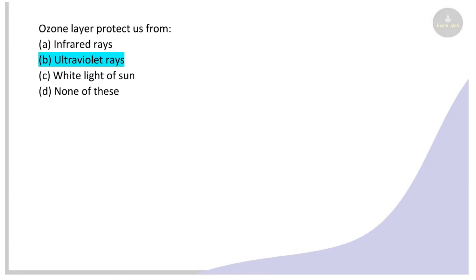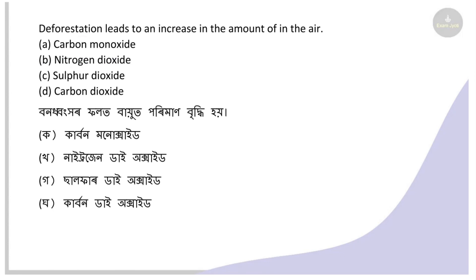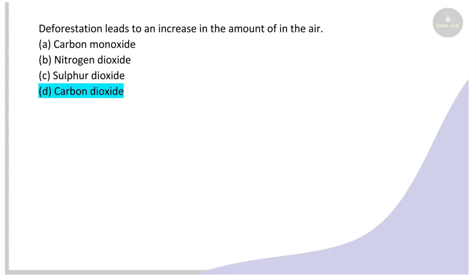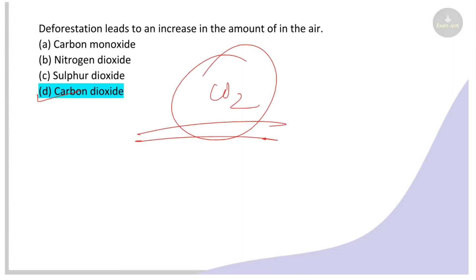The ozone layer protects us from UV rays — that is the right answer. Next: What gas is responsible for the increase in the amount of air pollution? The options include carbon monoxide, nitrogen dioxide, sulfur dioxide, and carbon dioxide. The right answer is carbon dioxide.